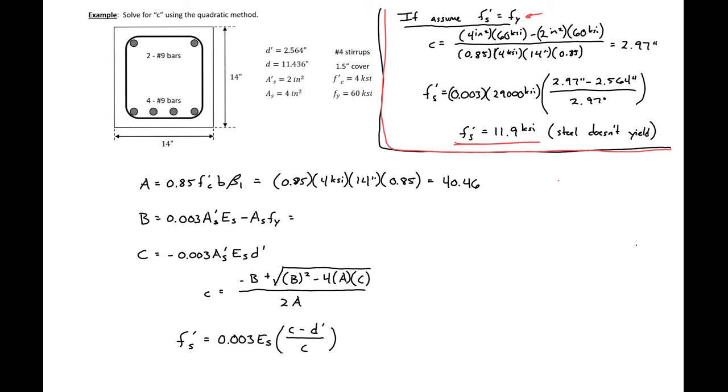We can then plug in and find our b. So we'll have 0.003 times 2 square inches times 29,000 ksi minus 4 inches squared times 60 ksi. And we'll get a b equal to negative 66.